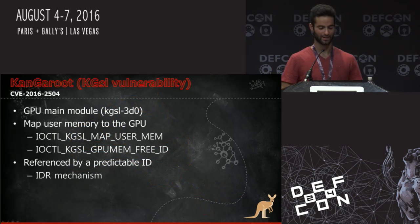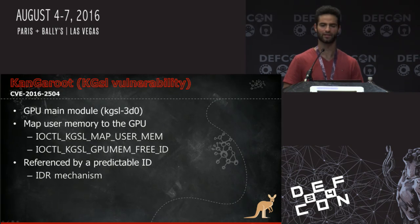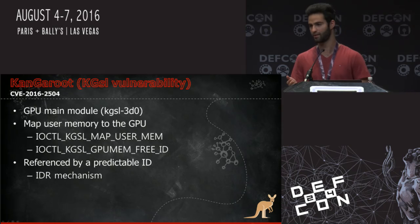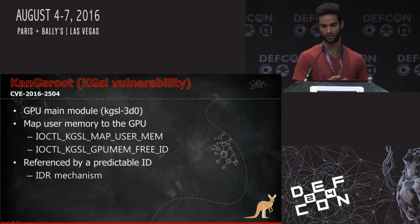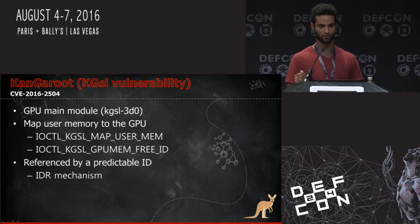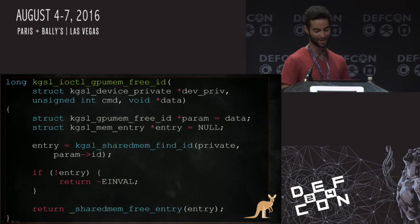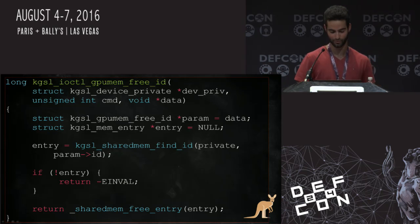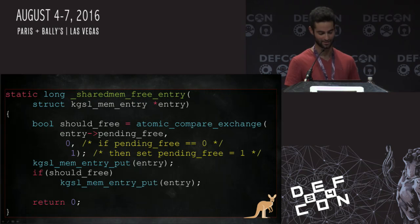Finally, KangaRoot — a vulnerability in the KGSL 3D driver, the wrapper between user mode and the GPU. Each time we map data to the GPU, an object called KGSL_mem_entry is allocated, managing the address range, ref count, protection level, and other properties. These mappings use the IDR mechanism. We went to the destroy function and saw no pending check on the destroy sequence. But when we went to kgsl_sharedmem_free_entry, they did not forget to add the lock there — so it's appropriately locked and we don't have that vulnerability.